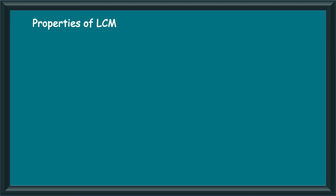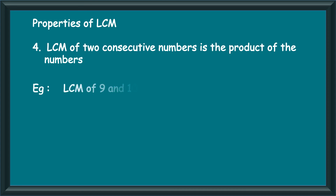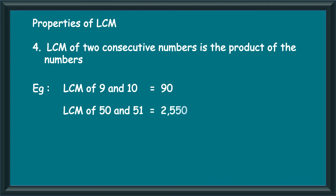The fourth property of LCM: LCM of two consecutive numbers is also the product of the numbers. For example, LCM of the consecutive numbers 9 and 10 is the product of 9 into 10, equal to 90. And the LCM of the consecutive numbers 50 and 51 will be the product of the numbers 50 into 51, equal to 2550.